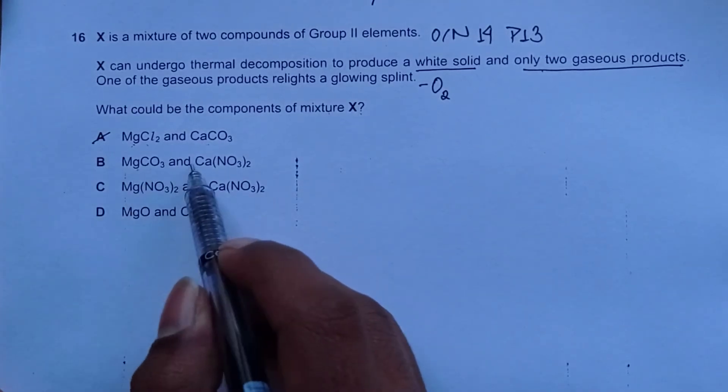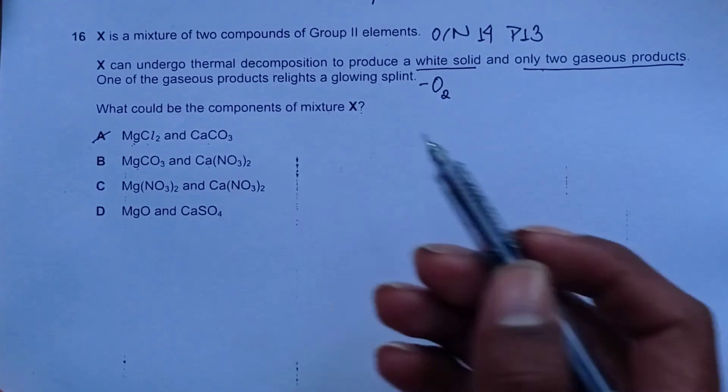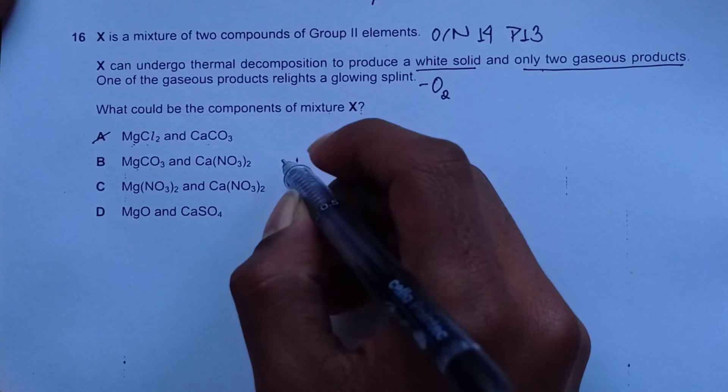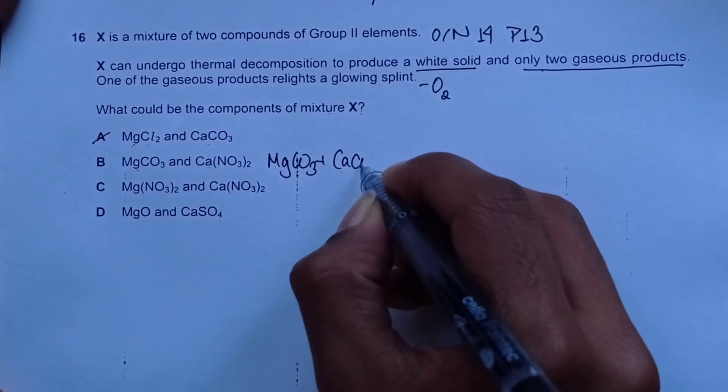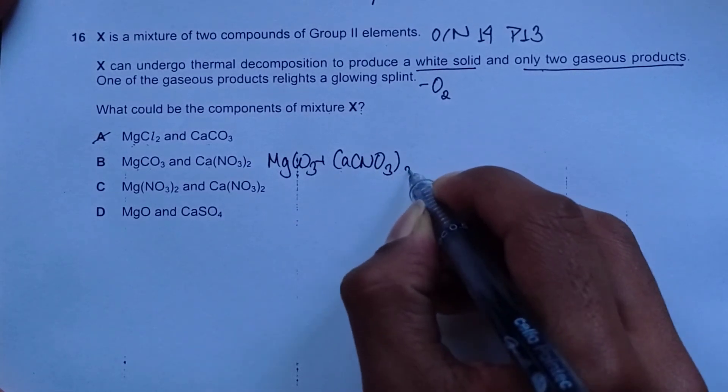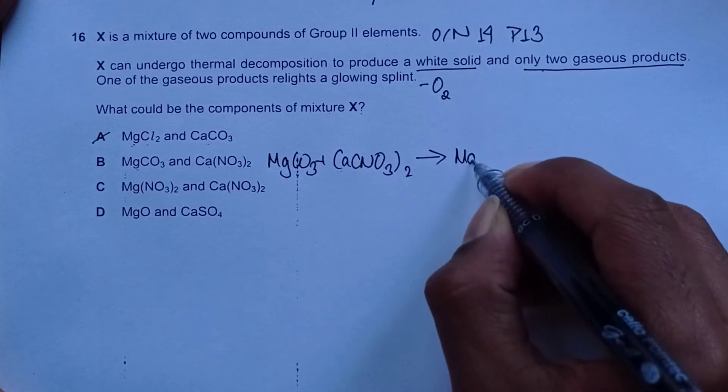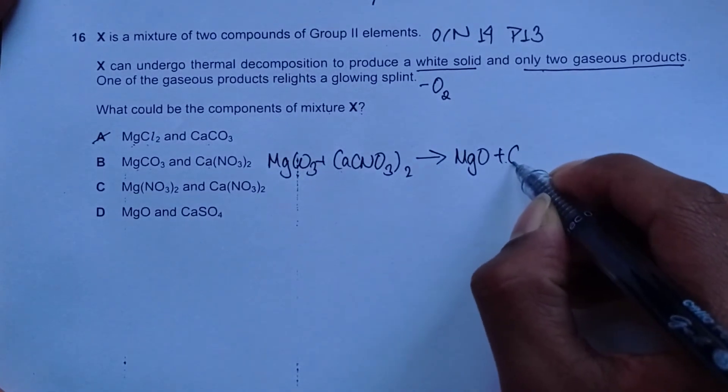For option B, magnesium carbonate and calcium nitrate. Both of these compounds can undergo thermal decomposition. Let's try to thermally decompose this. We have MgCO3 plus Ca(NO3)2 and when we thermally decompose this, we will have magnesium oxide from this magnesium carbonate and CO2.